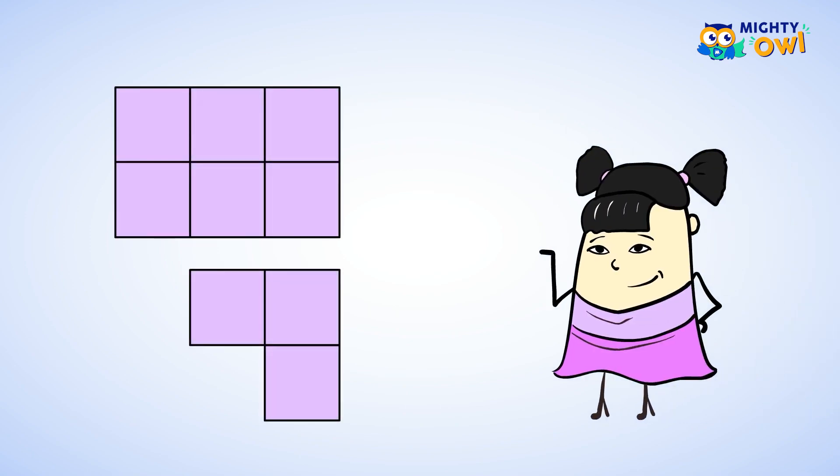Now, let's practice finding the area of some shapes. All right. This shape looks like it has six square units inside of it. And that means it has an area of six units squared.